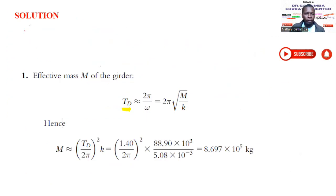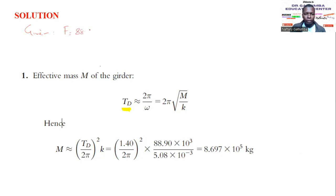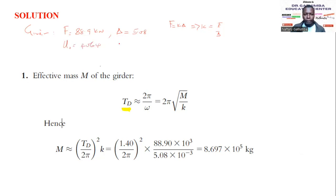Given: a force of 88.9 kN produces a static displacement of 5.08 millimeters (5.08 × 10⁻³ meters). Since F = k × δ, we can calculate the stiffness as k = F / δ. We are also given that the initial displacement amplitude u₀ = 5.08 mm, u₁ (after one cycle) = 4.064 mm, and the damped period T_d = 1.4 seconds. We are first required to determine the effective mass of the girder.